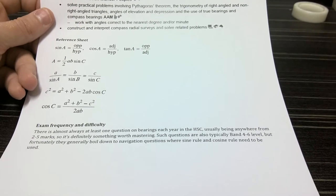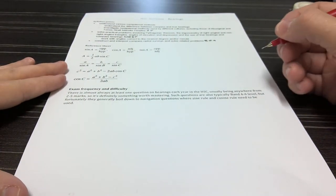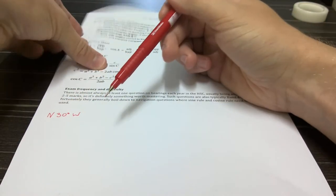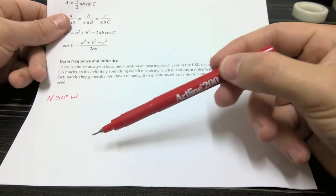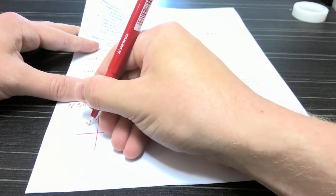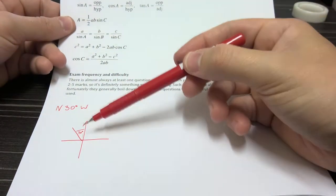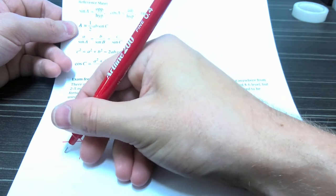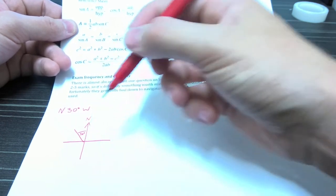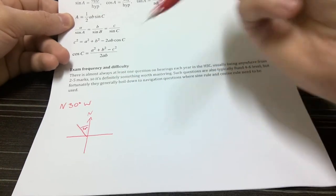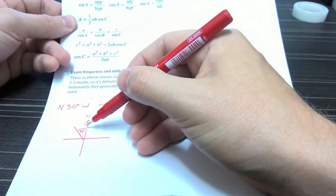Let me write a few important points before we go into past HSC questions. First, the difference between true bearings and compass bearings. Compass bearings are written like: North 30 degrees West. What that means is we start on the northern direction and then go 30 degrees in a westerly direction. With compass bearings, it always starts with north or south first.